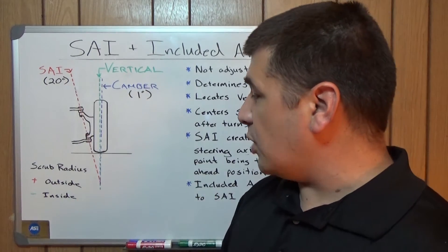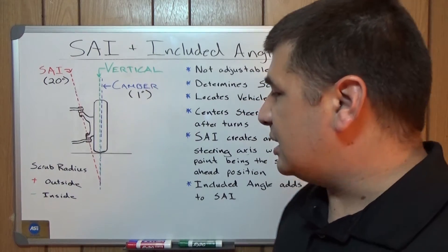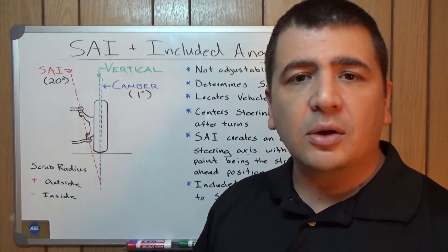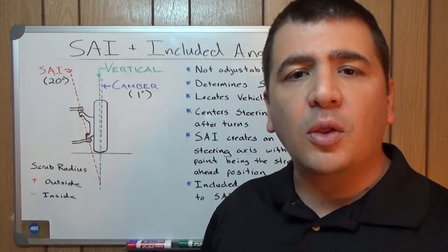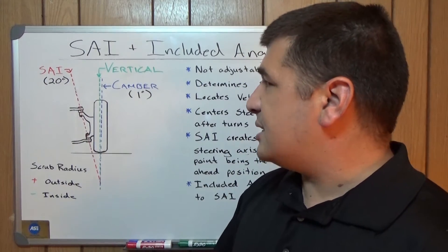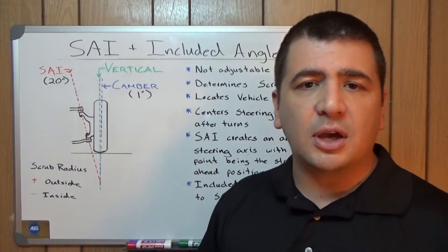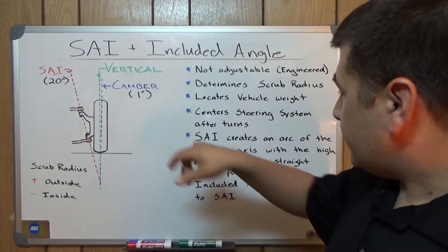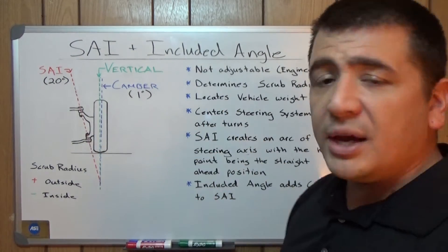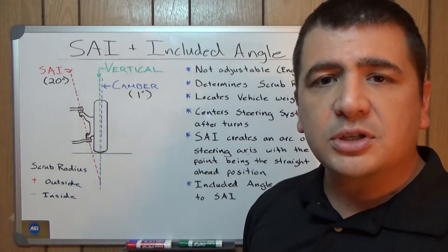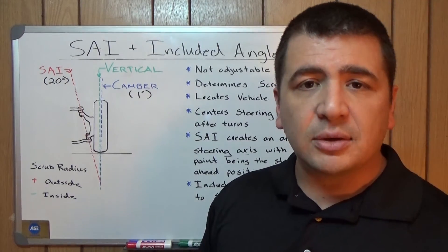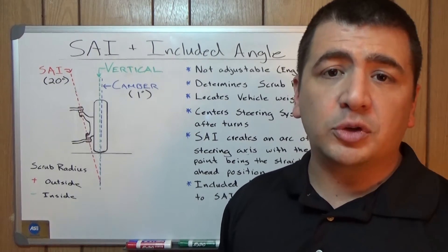The biggest thing with scrub radius is that it is equal on both sides of the vehicle. It's not an angle that can be measured — it's an angle that's inferred, determined by all the other angles being properly set, which is the case with SAI as well and included angle, because it involves the other angles. The purpose of SAI is to locate the weight of the vehicle on the tires through the suspension exactly how they want it to sit. The other purpose it serves is that it will return the steering system to center or to straight ahead after you're done with a turn.